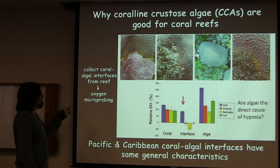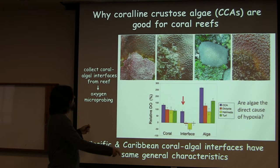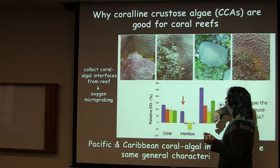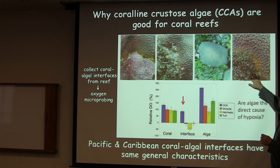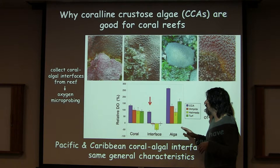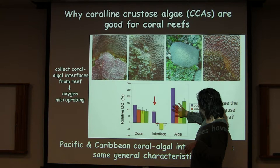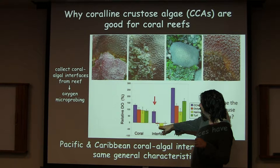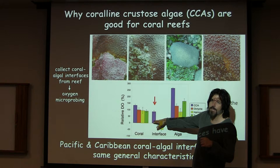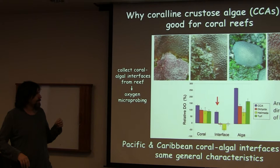So here is a Caribbean site. When we've got the different CCAs, the macroalgae is Halimeda, and then this is the turf — this is a turf interaction zone. We're just looking for DO concentrations. You've got coral doing their stuff, you've got the algae doing its stuff. And then at the interfaces, you see either low oxygen or hypoxic conditions, except for where the CCA is. And what that means is that the CCA is not causing hypoxic zones.